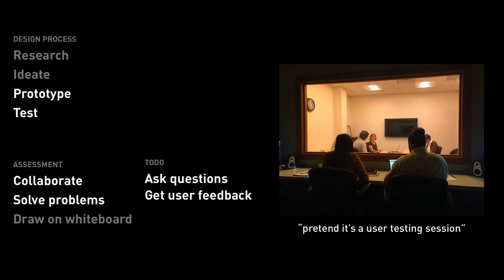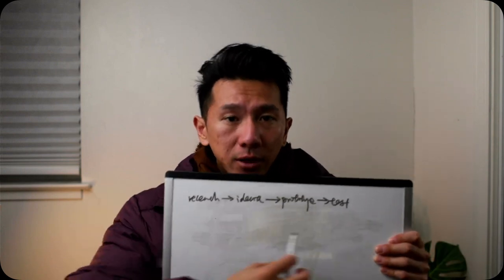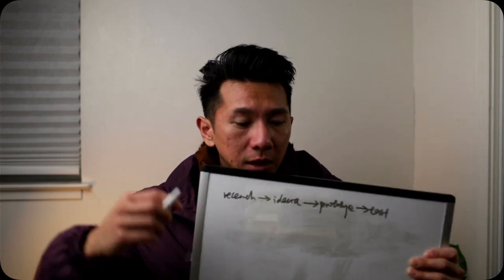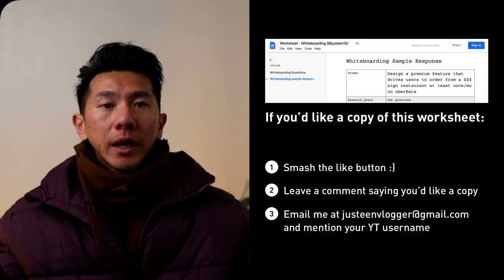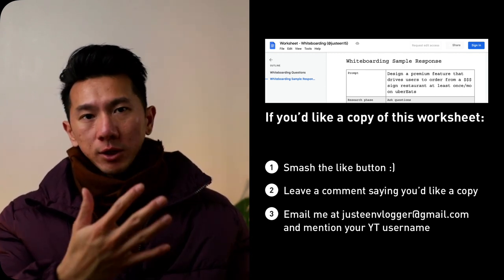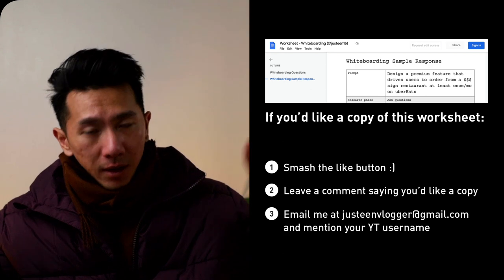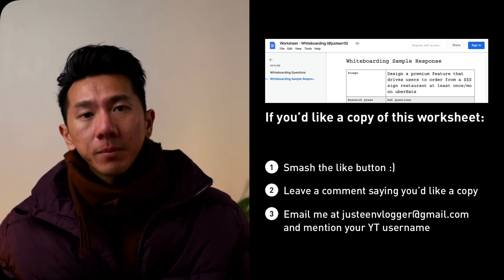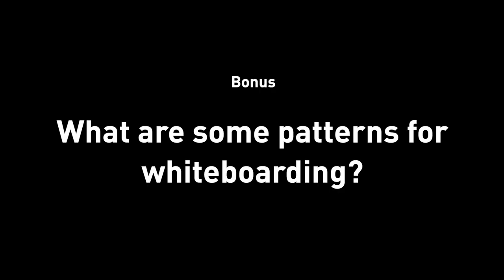Just talk through it with the interviewers: 'This is a button that does this, so it takes you to this screen with a card layout showing reviews — three stars, two stars.' That's it. In the prototype and testing phase, you'll likely ask the interviewers what they think and what potential user feedback there might be for the wireframe ideas you laid out. Then iterate — if what you have doesn't address the problem, think of an alternative solution. It's also okay to draw out the whole design process as a high-level framework. If you'd like a copy of this whiteboarding framework design process worksheet, leave a comment below and send me an email and I'll respond within 24 hours.